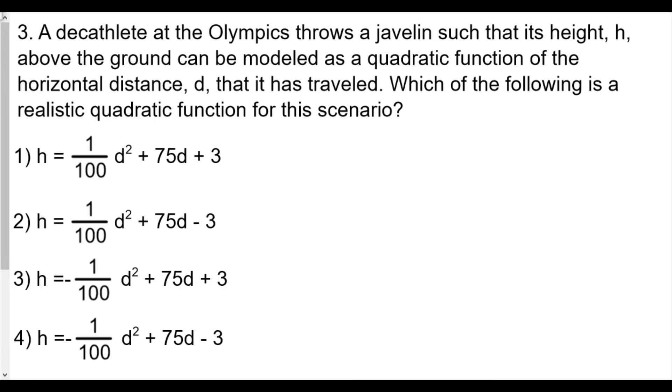A decathlete at the Olympics throws a javelin such that its height h above the ground can be modeled as a quadratic function of the horizontal distance d that it has traveled. Which of the following is a realistic quadratic function for this scenario? The height is based upon the distance traveled. One thing we'll see is it cannot be choice 1 or 2, because the height of the javelin is going to go upwards and then come back downwards. The shape of this parabola is definitely going to be facing downwards, and therefore a must be less than zero.